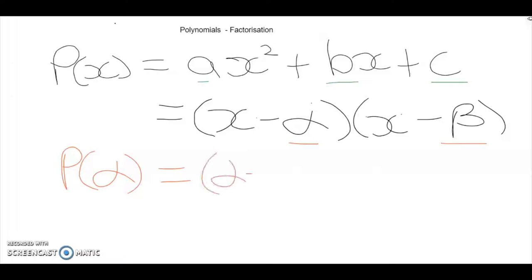we'll simply get (α - α)(α - β). This term will be zero, and it doesn't matter what the second term is, the whole polynomial will be zero.